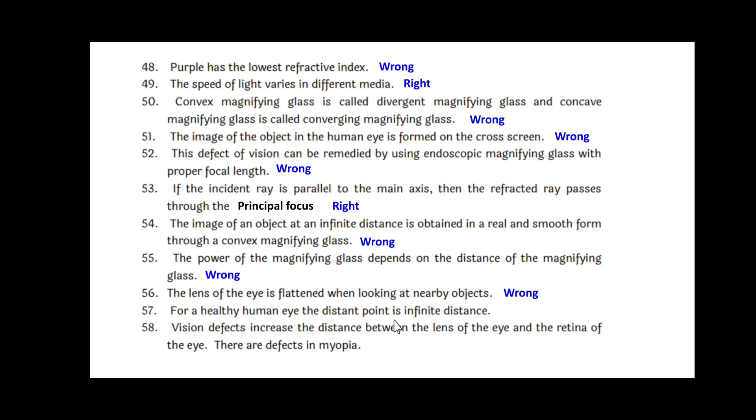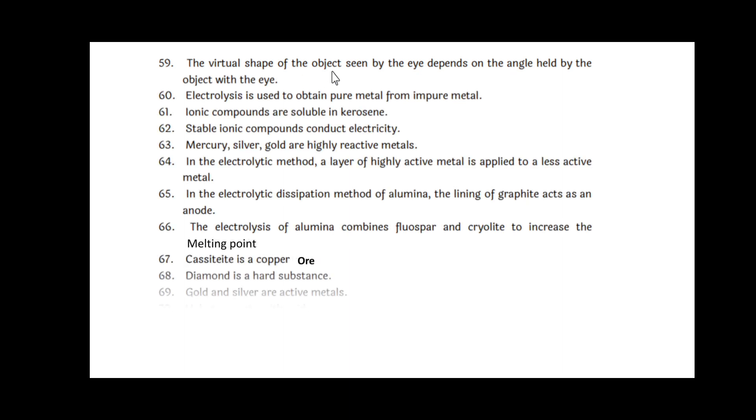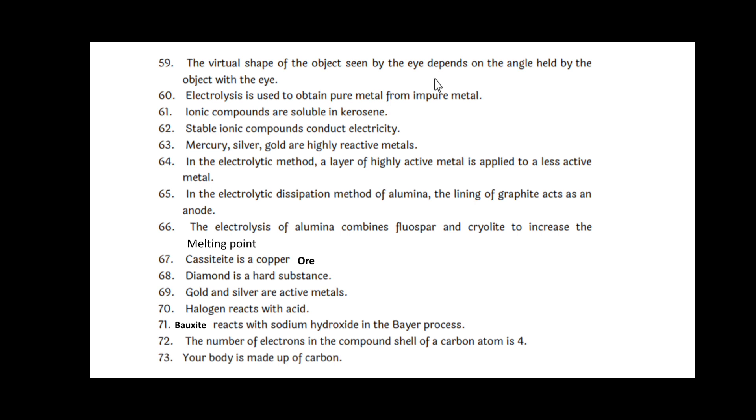The power of the magnifying glass depends upon the distance of the magnifying glass. Wrong. The lens of the eye is flattened when looking at nearby objects. Wrong. For a healthy human eye, the distant point is infinite distance. That is right. The vision defect increases the distance between the lens of the eye and the retina of the eye. This is the defect in myopia. Right. The virtual shape of an object seen by the eye depends upon the angle held by the object with that eye. Right.